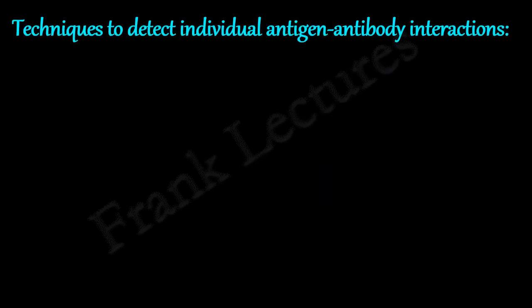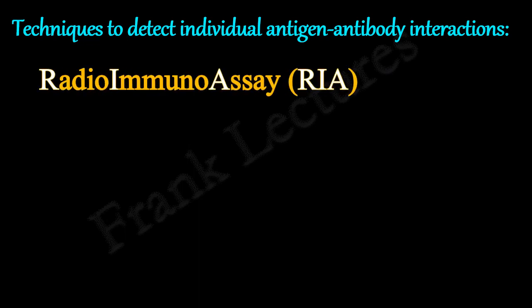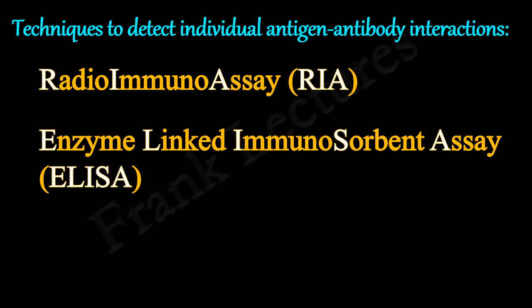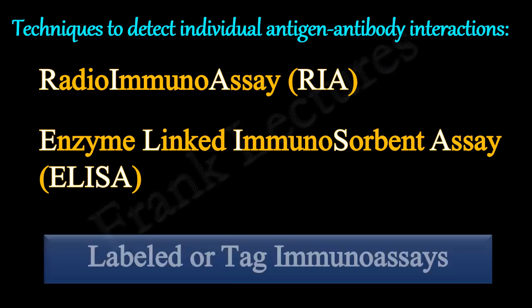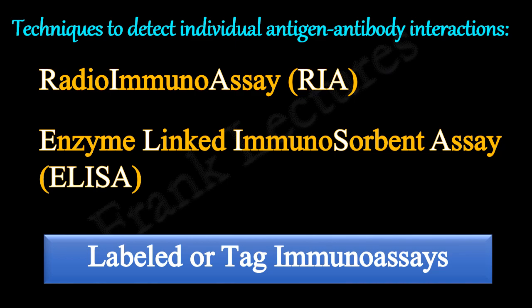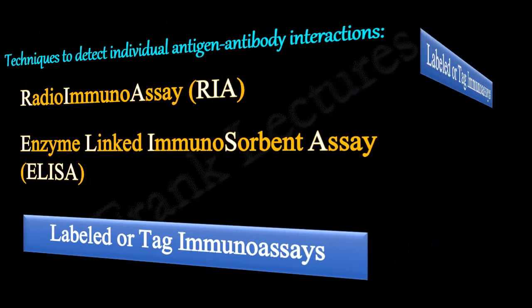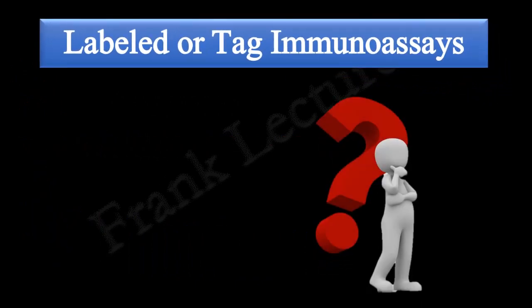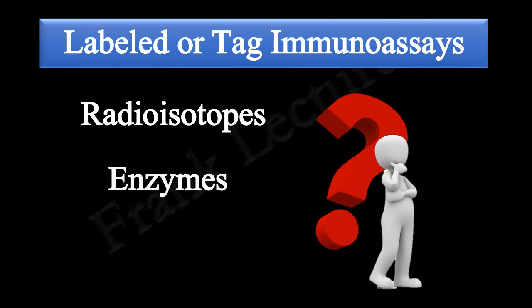Two most popular techniques are radioimmunoassay and enzyme-linked immunosorbent assay. RIA and ELISA are labeled or tagged immunoassays. Today we will understand what we mean by labeled or tagged immunoassay, and what role radioisotopes and enzymes play in these assays.